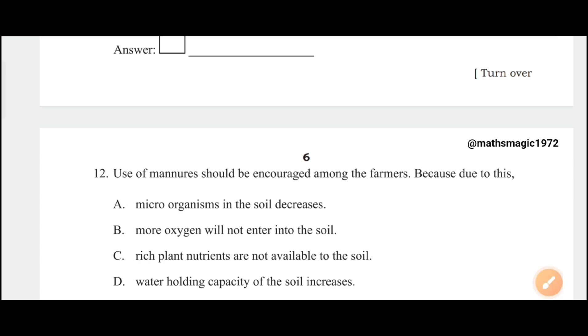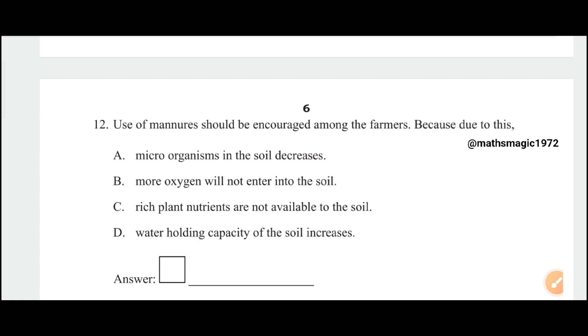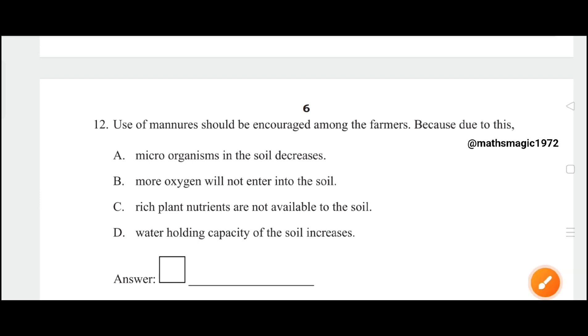Use of manures should be encouraged among farmers because: A) microorganisms in soil decreases, B) more oxygen will not enter into the soil, C) rich plant nutrients are not available to the soil, D) water holding capacity of soil increases. The correct answer is option D, water holding capacity of the soil increases.